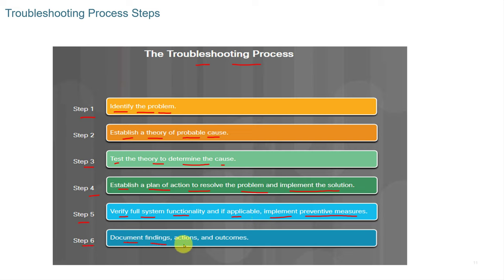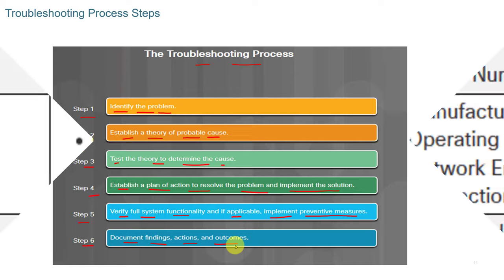Step six: document your findings, actions, and outcomes. For something like a bad power strip, you'd document it so IT staff know what happened — for instance, that a replacement was taken from storage. Documenting actions and outcomes helps people who come after you understand what occurred.